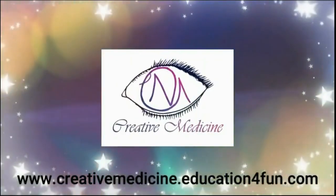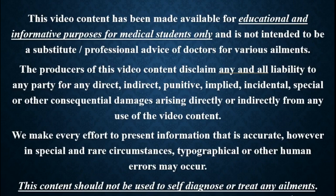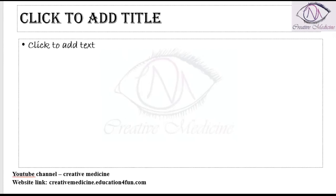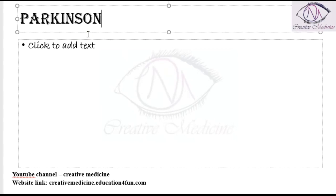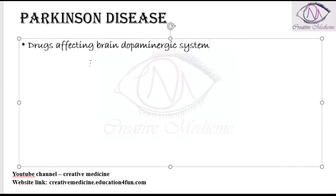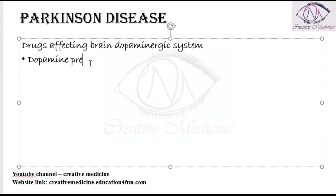Hello friends, welcome to Creative Medicine. In this lecture we will learn about Parkinson's disease. In Parkinson's disease we have two types of drugs: drugs which are affecting the brain dopaminergic system, and drugs affecting the brain cholinergic system. The first category, drugs affecting the brain dopaminergic system, include a dopamine precursor.